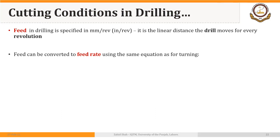The feed in drilling is specified in millimeters per revolution or inches per revolution. It is the linear distance the drill moves for every revolution. You might have noticed that in the case of drilling, both cutting speed and feed are defined with respect to the twist drill. In the case of turning, the cutting speed was with respect to the blank being turned, and the feed was defined with respect to the linear travel of the cutting tool.